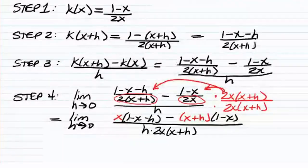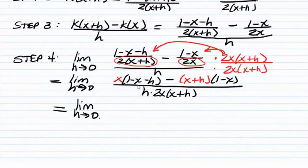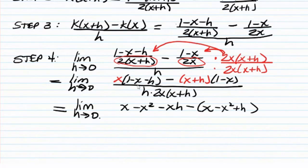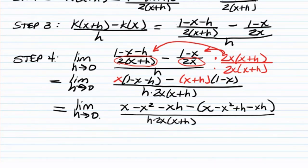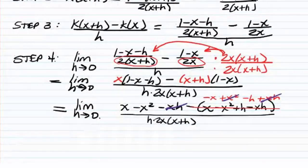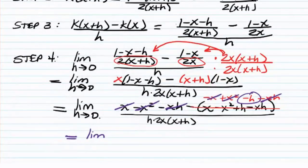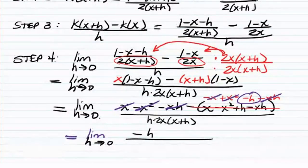And in the denominator, we have h and 2x and x plus h. Write your limit as h goes to 0. I'm going to distribute: so I have x minus x squared minus xh, minus — foiling this out — we will have x minus x squared plus h minus xh, all over h times 2x times x plus h. We simplify this; we're going to end up with negative x, positive x squared, negative h, and positive xh. So the xh's cancel, the x squared's cancel, the x's cancel, and all we're left with in the numerator is negative h.